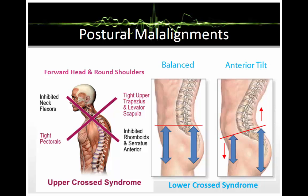Lower cross syndrome is referred to as distal or pelvic cross syndrome. Tightness of the thoracolumbar extensors on the dorsal side crosses with tightness of the iliopsoas and rectus femoris. Weakness of the deep abdominal muscles ventrally crosses with weakness of the gluteus maximus and medius. This creates joint dysfunction particularly at the L4-L5 and L5-S1 segments, the SI joint, and the hip joint. Specific postural changes include anterior pelvic tilt, increased lumbar lordosis, lateral lumbar shift, lateral leg rotation, and knee hyperextension. If the lordosis is deep and short, imbalance is predominantly in the pelvic muscles; if shallow and extending into the thoracic area, imbalance predominates in the trunk muscles.